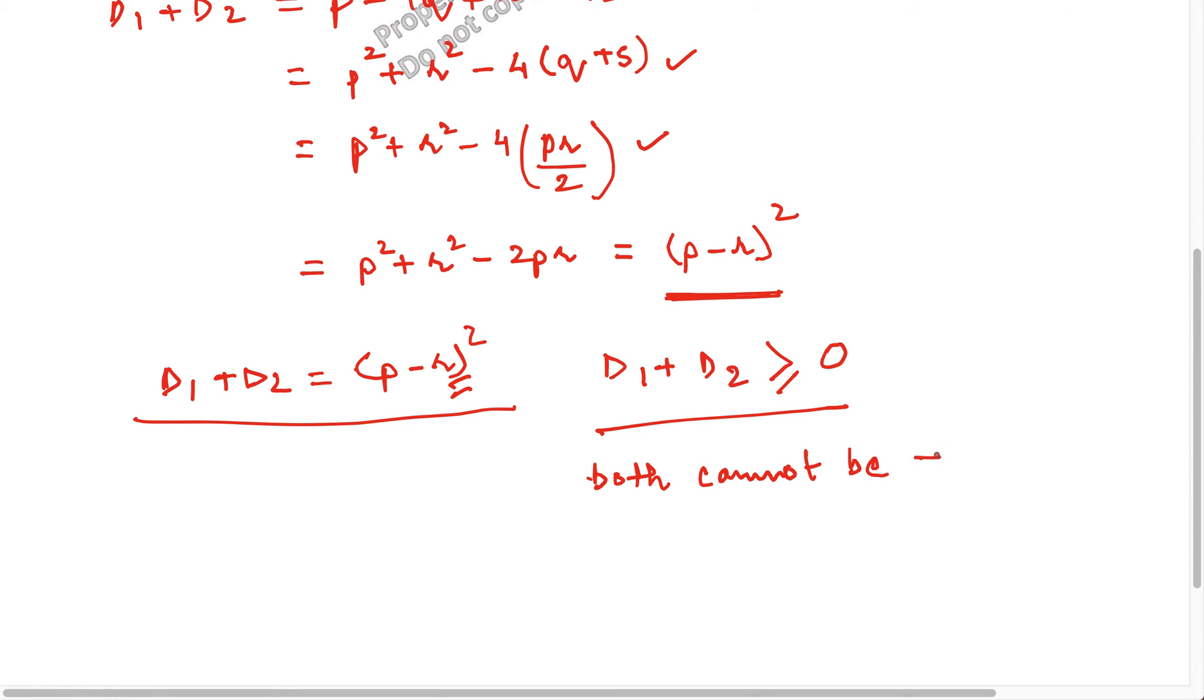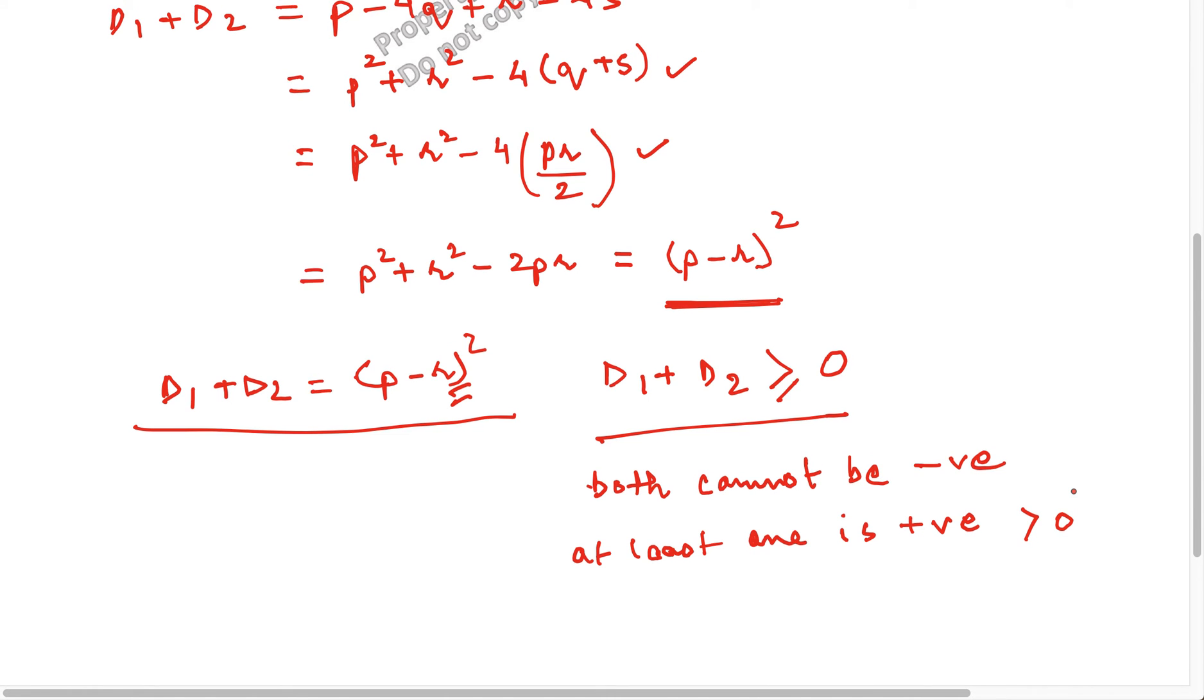Both cannot be negative. And if both cannot be negative, then at least one is positive. At least one is positive and greater than zero. And this is what we had to prove.